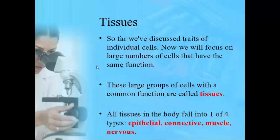Next we'll move on to various types of tissues. We've talked about cells — now we'll get more organized and complex by discussing tissues. Any large group of cells with a common function is called a tissue, and all tissues in the body fall into one of four categories: epithelial tissue, connective tissue, muscle tissue, and nervous tissue. For this chapter, we'll focus on epithelial and connective tissue, as muscle and nervous tissue will be covered in their own chapters.